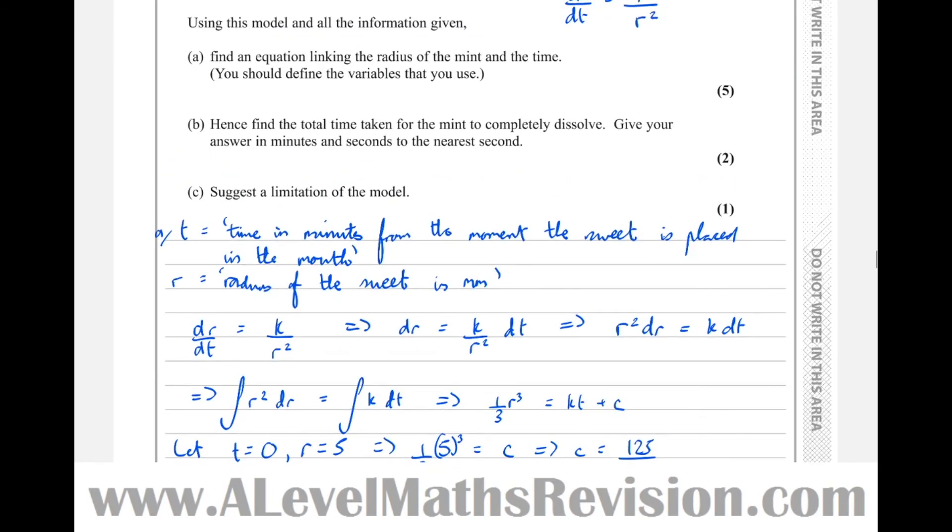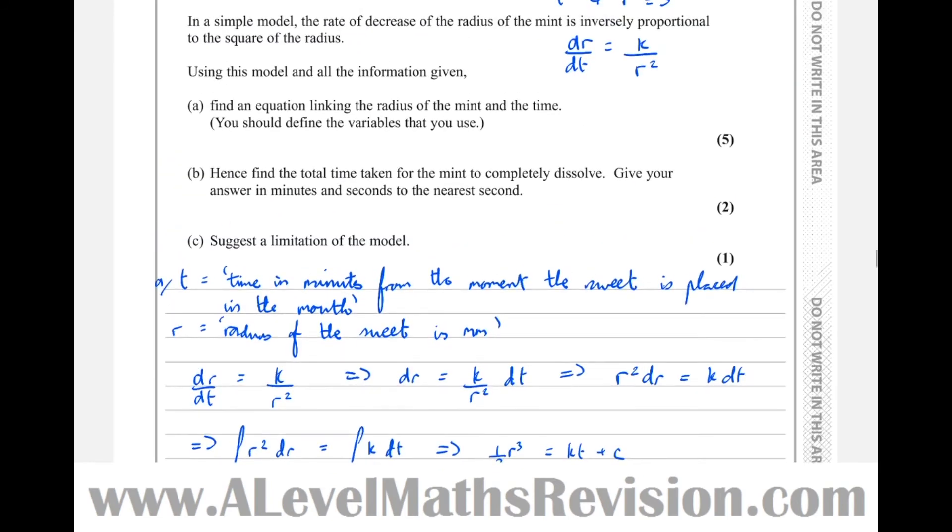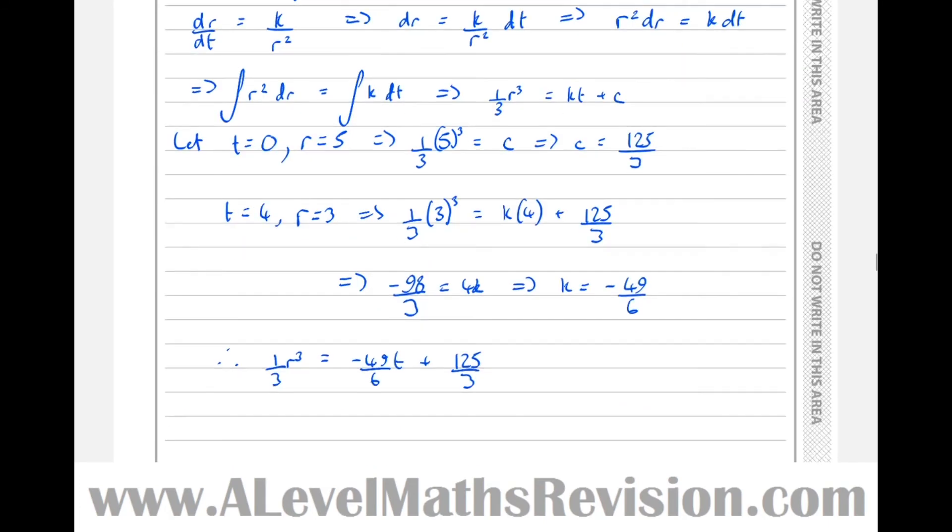Now let's see if it asks us to have it in any particular format. Find the equation linking the radius of the mint and the time. When I've done that, it hasn't asked it for any particular form, so I've eliminated the differential. I've got now it all in terms of the two variables. So that's that part done.